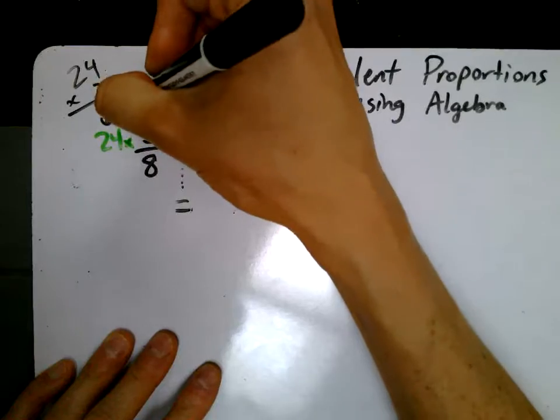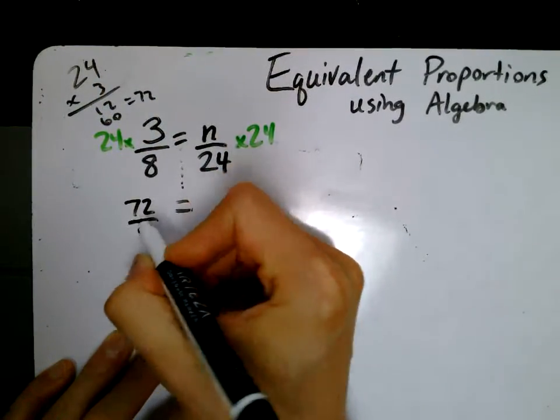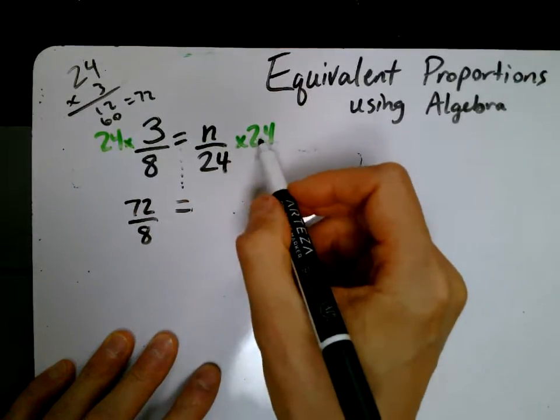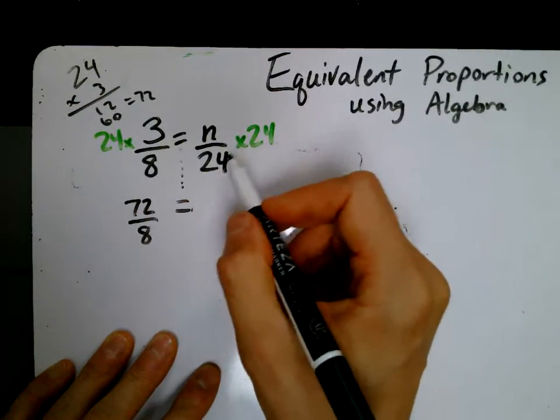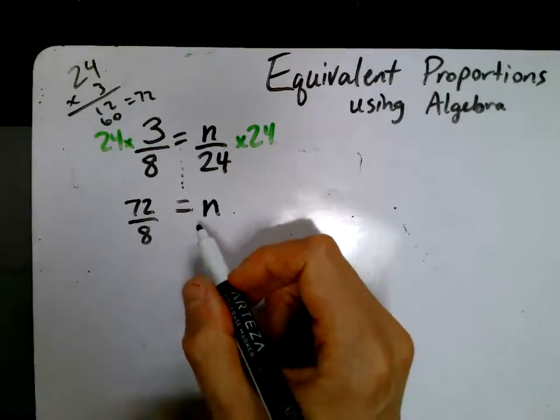60 plus 12 is 72. So what I'm going to have here is 72 divided by 8 equals, now 24 divided by 24, anything divided by itself is 1. So really I just have an n over here.